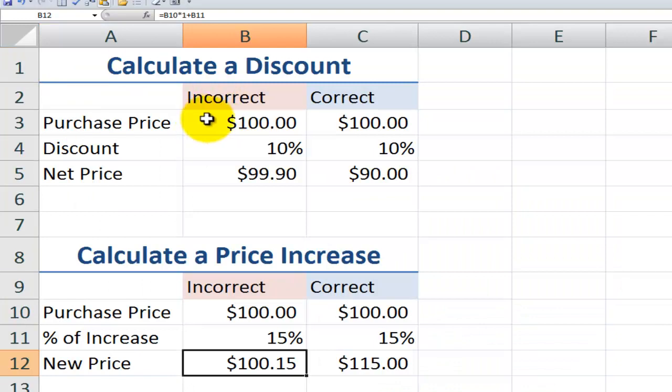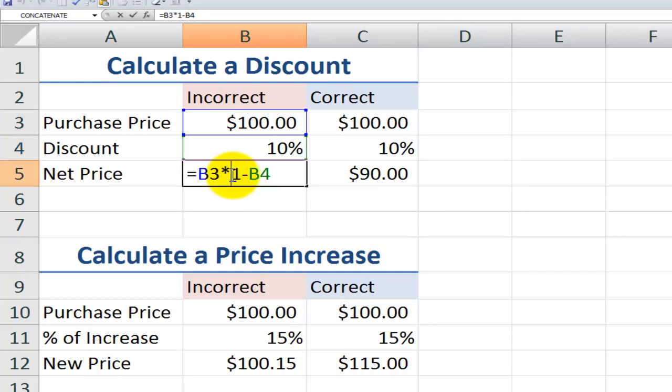Let's take a look at two other examples over here. I have an incorrect way to perform the calculation and then the correct way. So here we have a purchase price, a 10% discount. So we're not expecting to get a result where we're going to pay $100. We want to pay 10% less than that. So the incorrect way to do that is not to understand that Excel is going to use multiplication before it performs addition or subtraction.